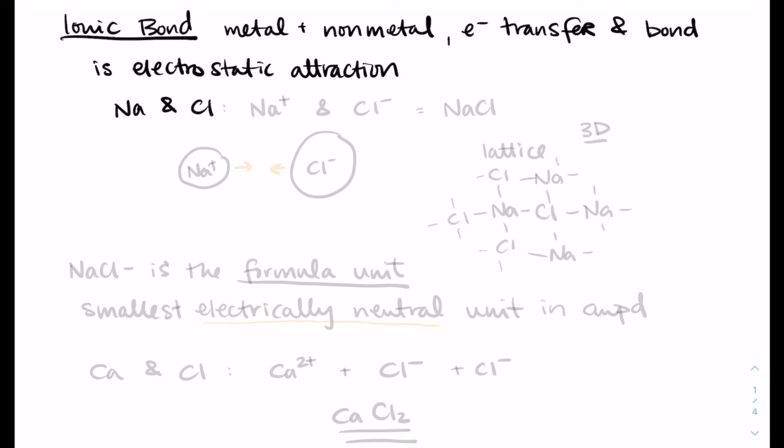So in sodium chloride, sodium becomes a cation, so the 1 plus charge, by giving its electron to chlorine, which becomes the Cl minus anion. And then we have an attraction between those two charges. Now, because this attraction occurs in 3D, so in all three dimensions, ionic compounds will form these kind of lattice structures. One sodium ion will attract chlorines all the way around it, and one chlorine ion will attract sodiums all the way around it. And so you just end up building out this lattice.